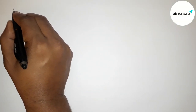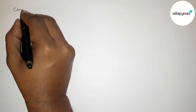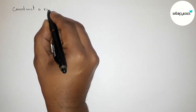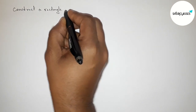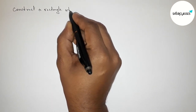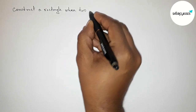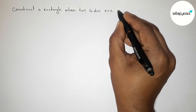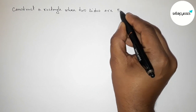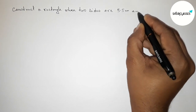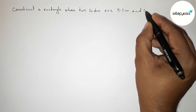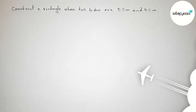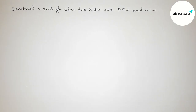Hi everyone, welcome to SI Share Classes. Today in this video we have to construct a rectangle whose two sides are 4.5 centimeters and 5.5 centimeters. Please watch the video till the end. Let's start.